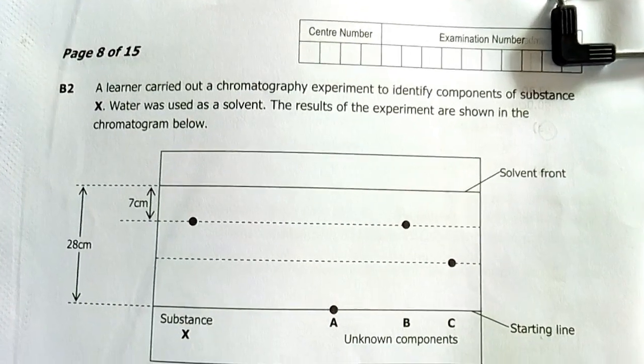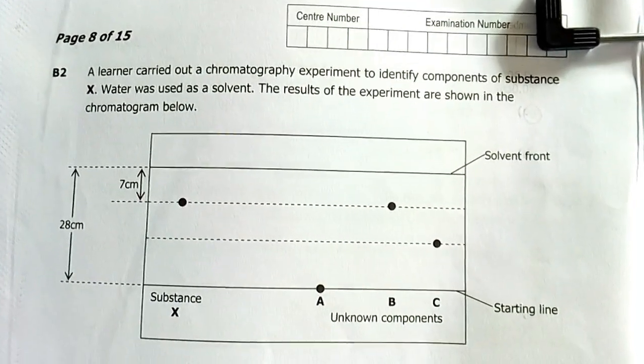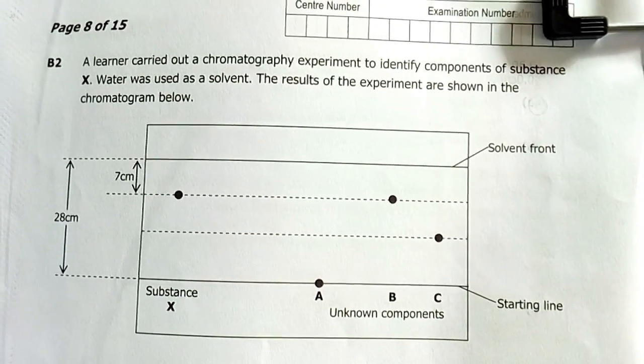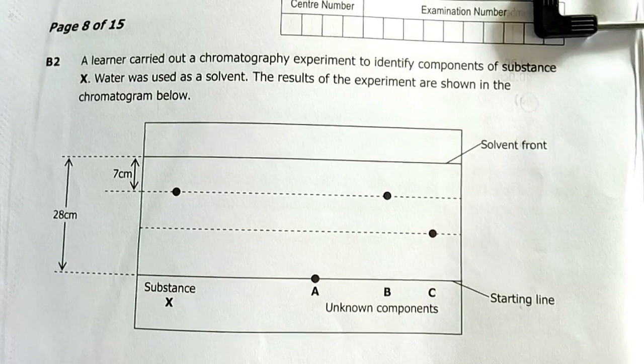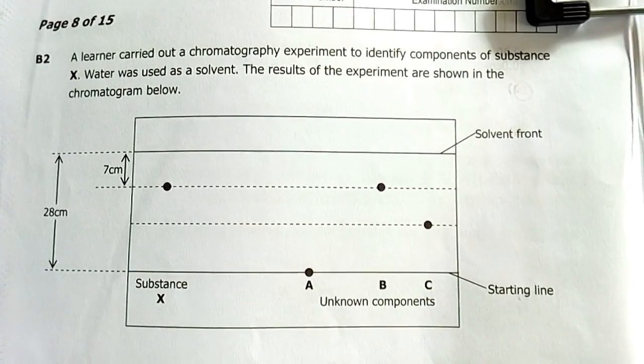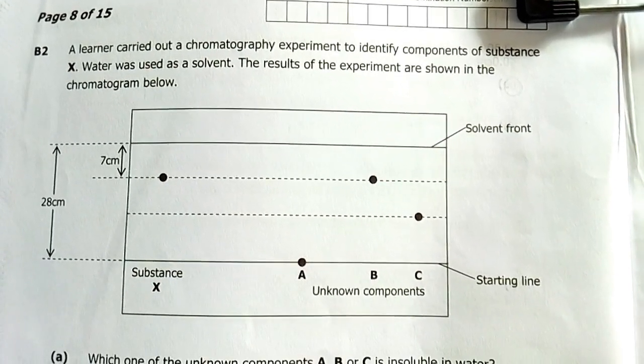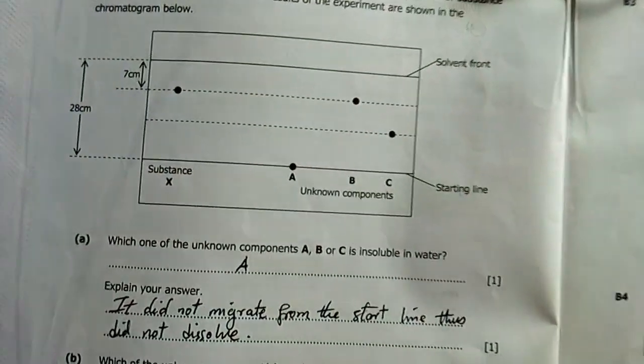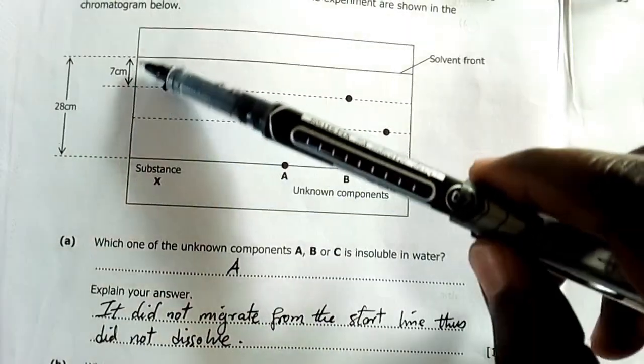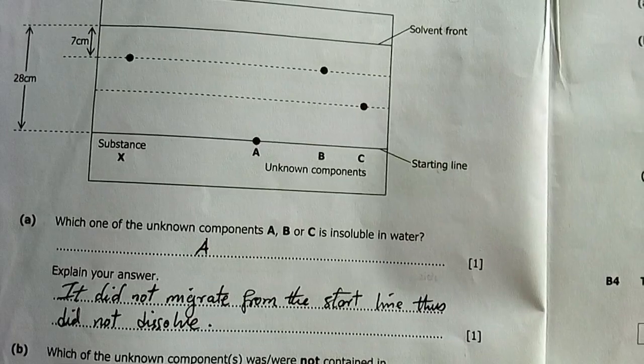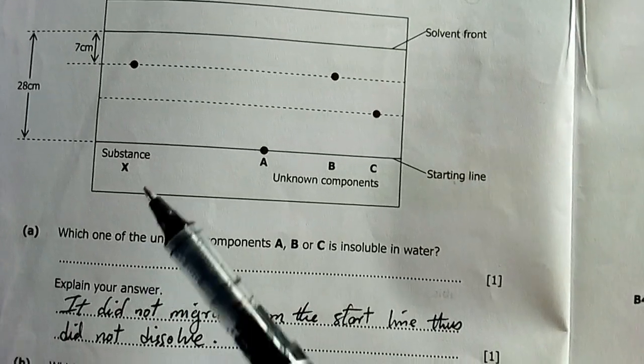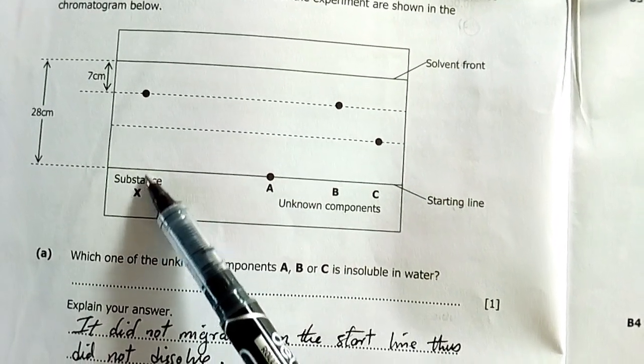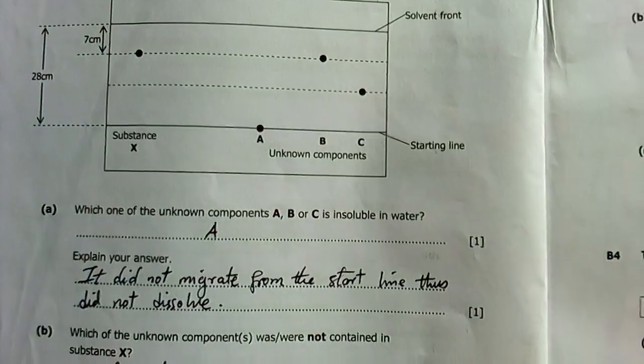Next part, B2: Elena carried out a chromatography experiment to identify components of substance X. Water was used as a solvent. The results are shown in the chromatogram below. This is the solvent front, starting line, and those distances. Substances A, B, and C, and substance X has dissolved in water to reach this height.